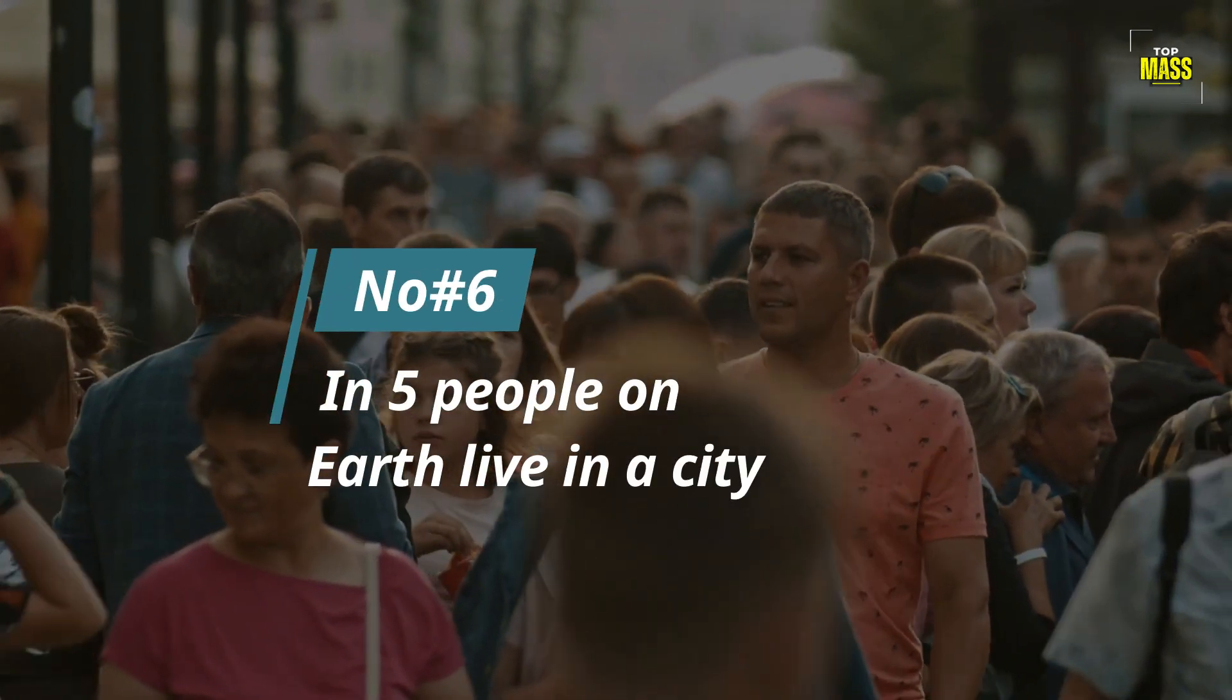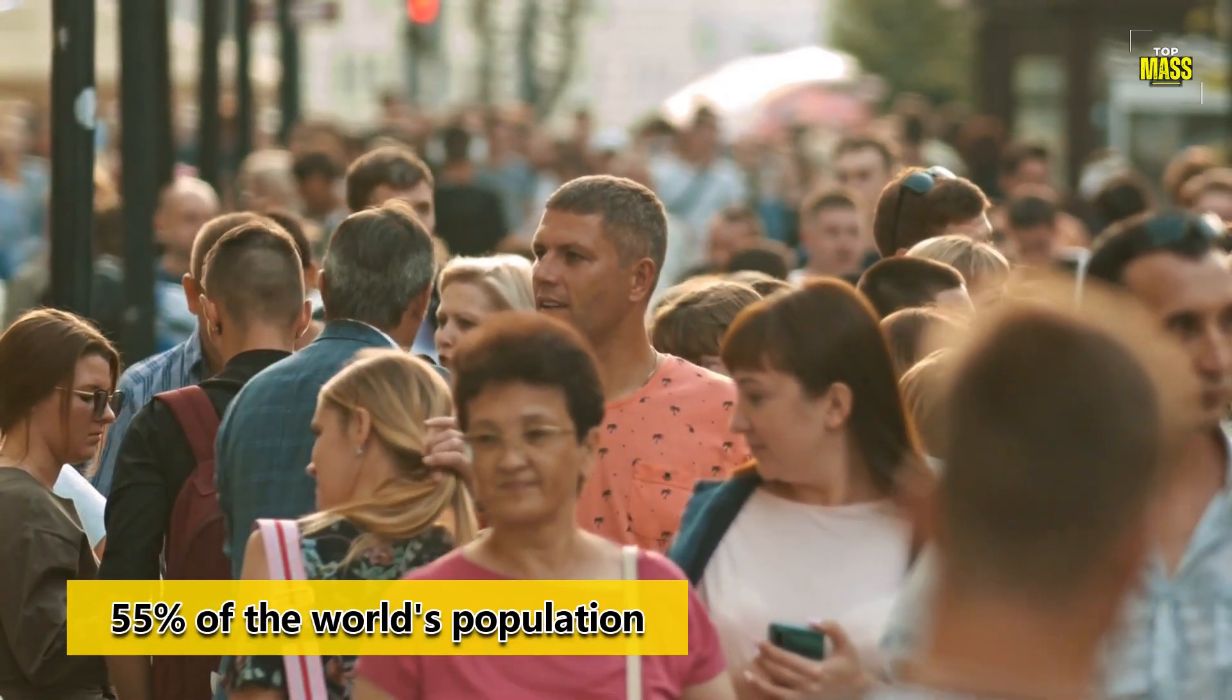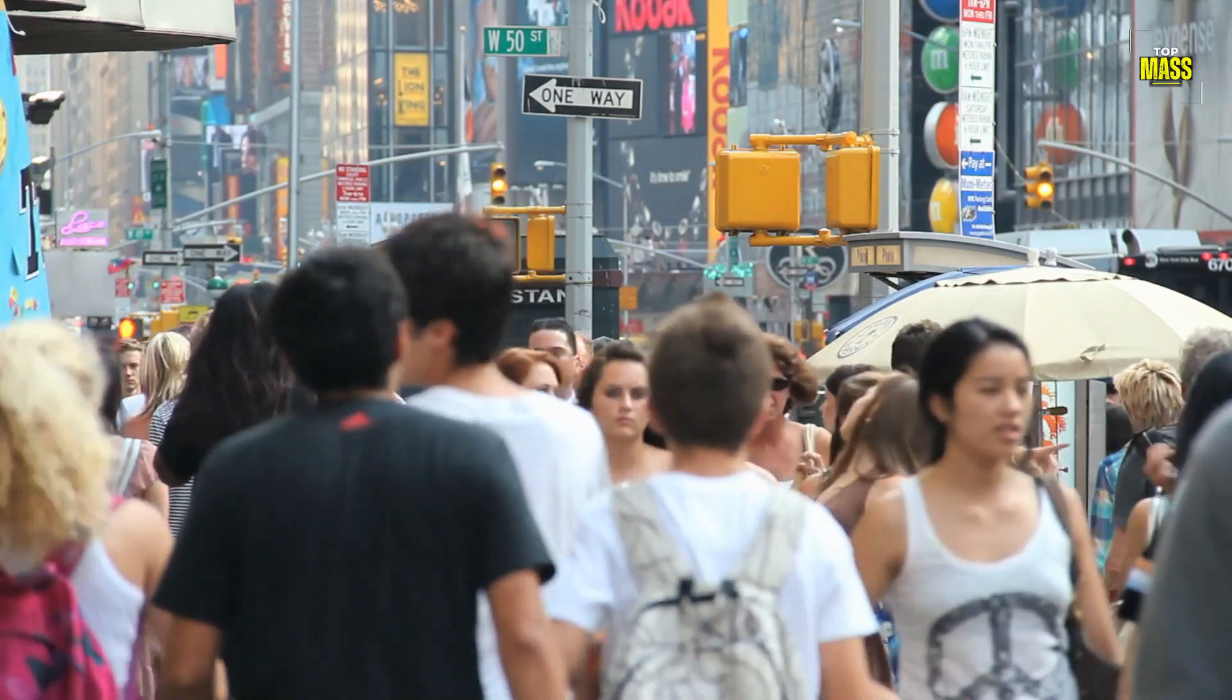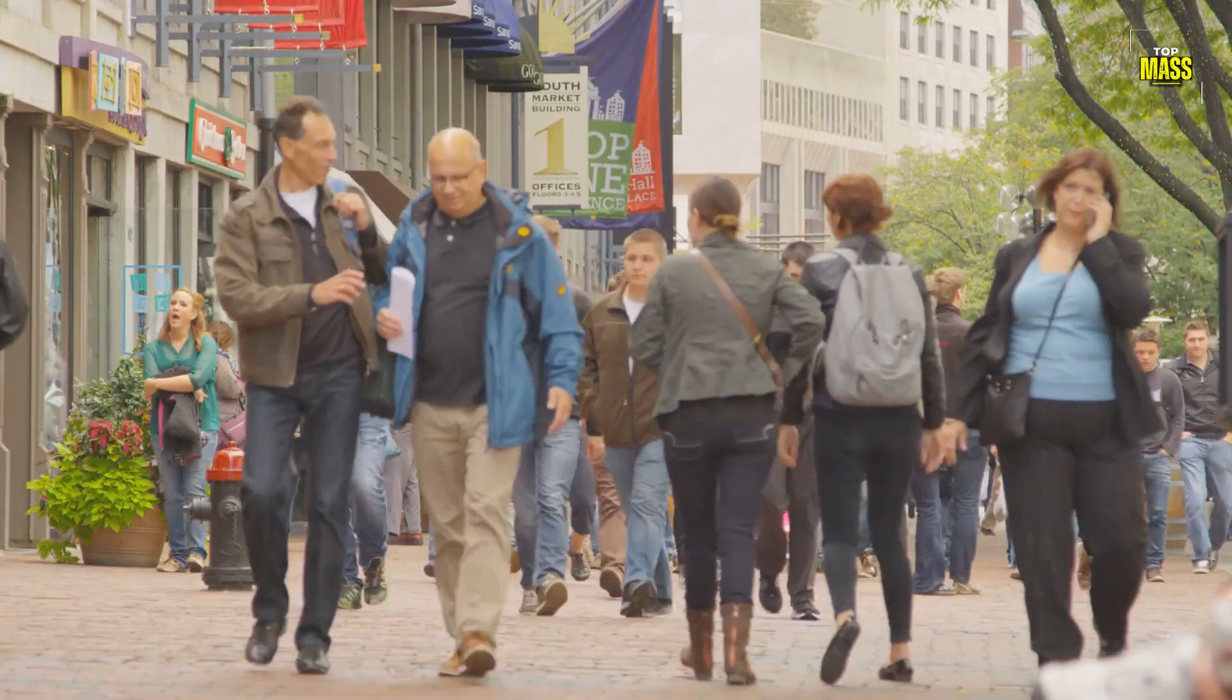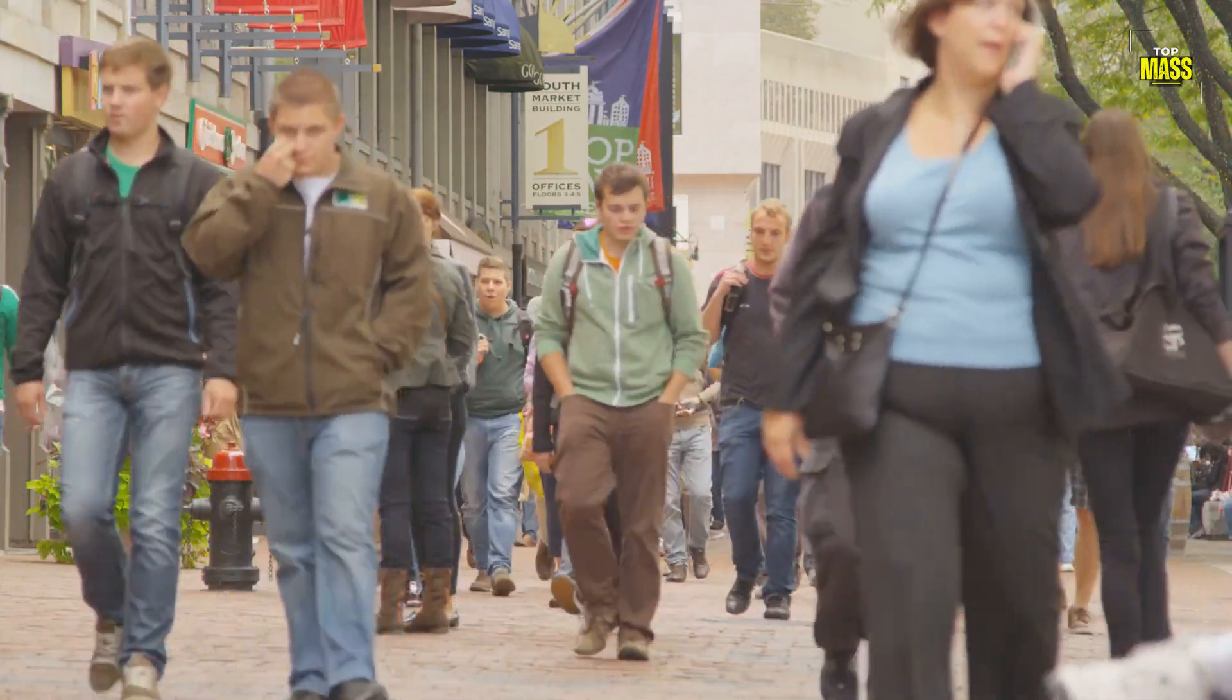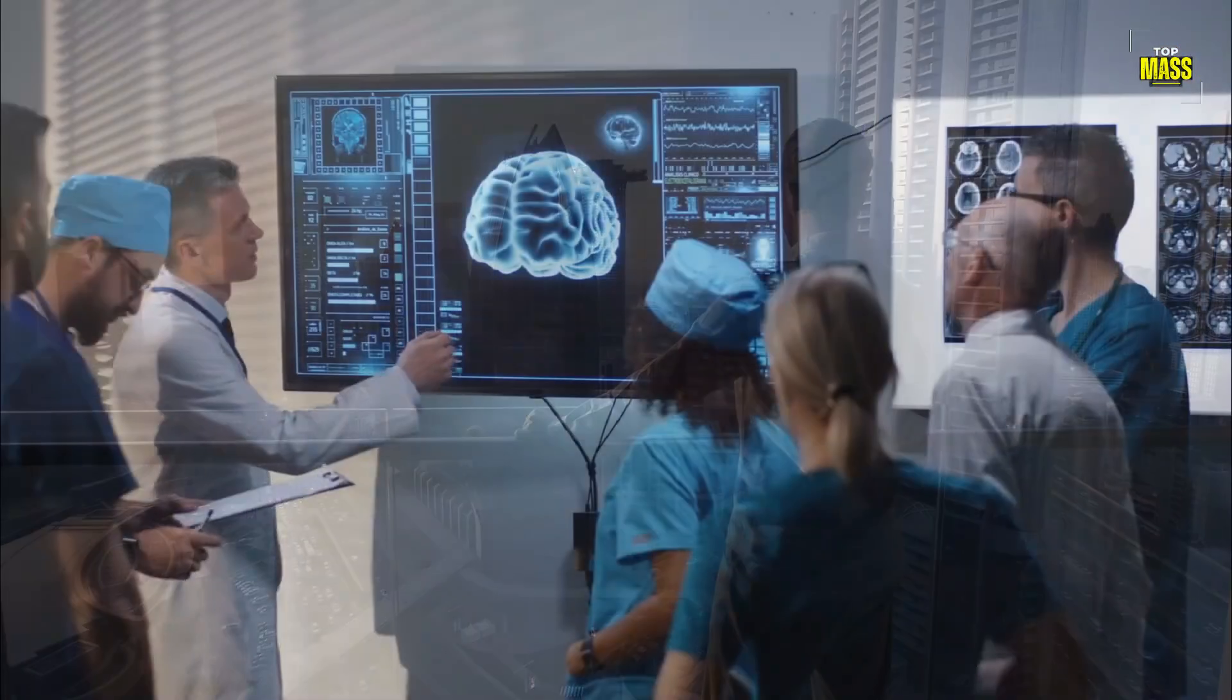Number 6. One in Five People On Earth Live In A City. Did you know that one in five people on Earth live in a city? That's around 55% of the world's population. The increasing urbanization trend is causing cities to become more crowded and larger than ever before. In fact, there are now over 30 megacities with populations exceeding 10 million people. The rise of urbanization can be attributed to various factors such as migration, globalization, and economic growth. However, it also brings about its own set of challenges such as overcrowding, pollution, and limited resources. Despite these challenges, living in a city does have its perks. Cities offer greater access to education facilities, healthcare services, and job opportunities compared to rural areas.